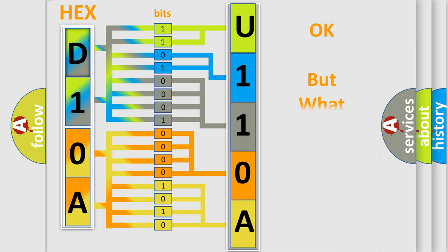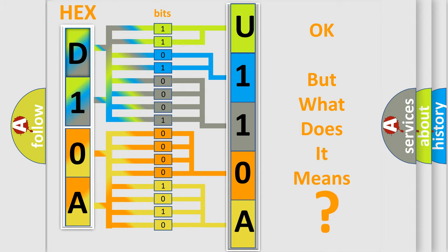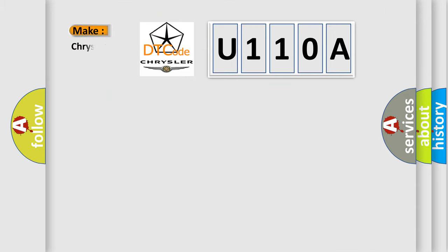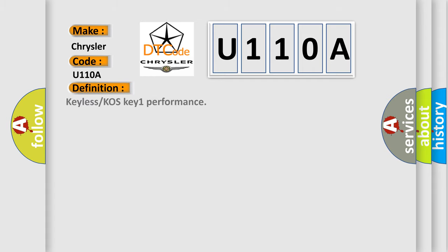The number itself does not make sense to us if we cannot assign information about what it actually expresses. So, what does the diagnostic trouble code U110A interpret specifically for Chrysler car manufacturers? The basic definition is: Keyless or COS key 1 performance.